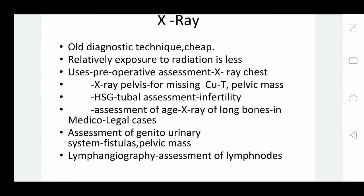Another use is whenever there is a missing copper T — we take X-ray pelvis. X-ray pelvis is taken with a uterine sound in situ, a lateral view. The lateral view will tell us first of all whether the copper T is present or not. If it is superimposed on the uterine sound, then we can conclude that it is in the uterine cavity. If it is displaced, it may be anterior or posterior — it may be in the myometrium, partially in the peritoneal cavity, or completely outside. X-rays will help us in knowing this.